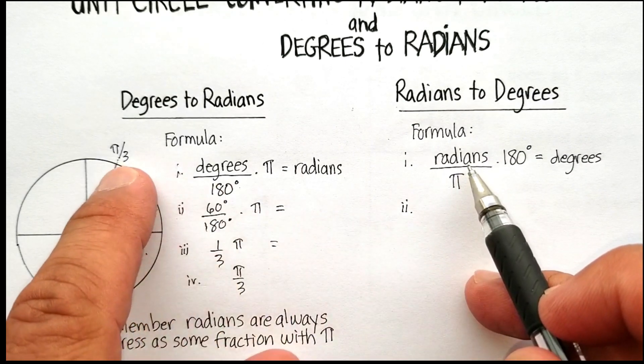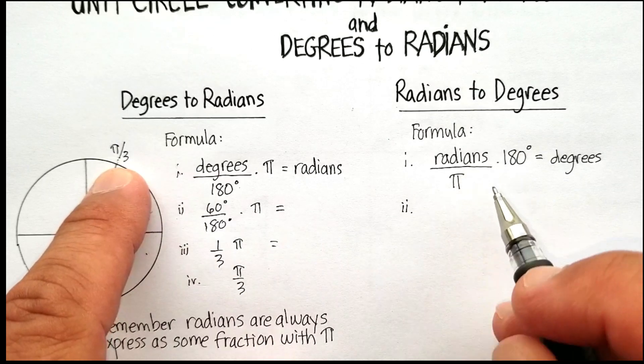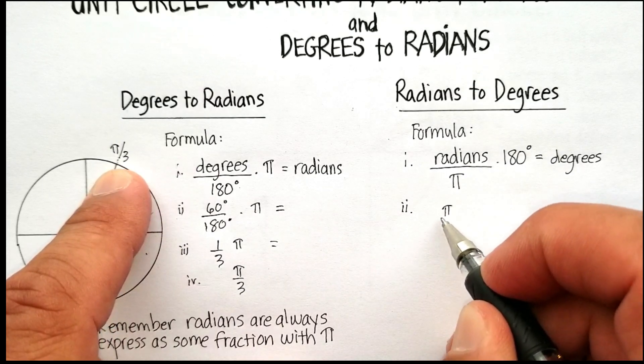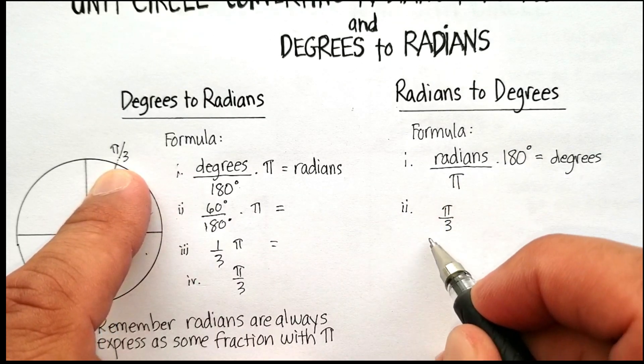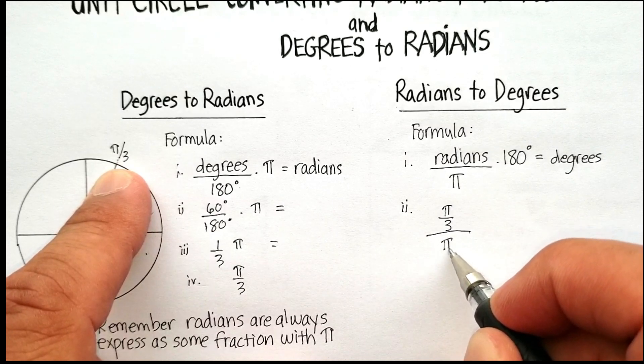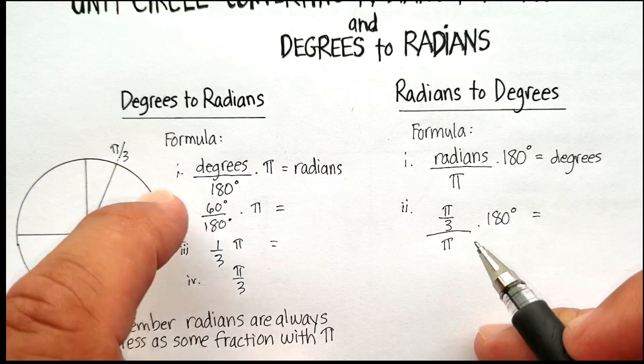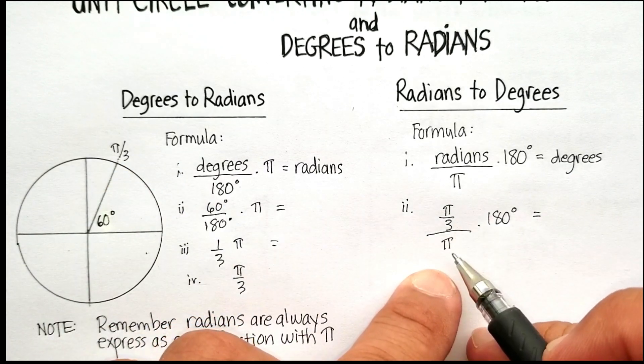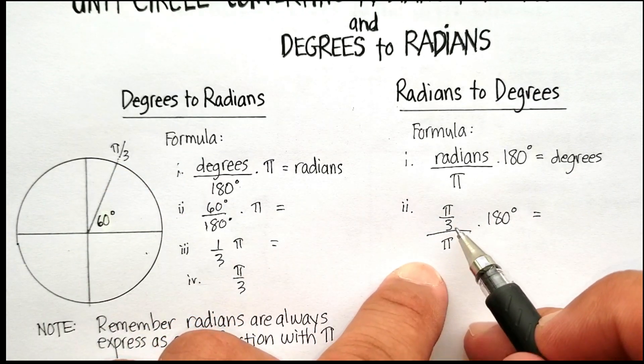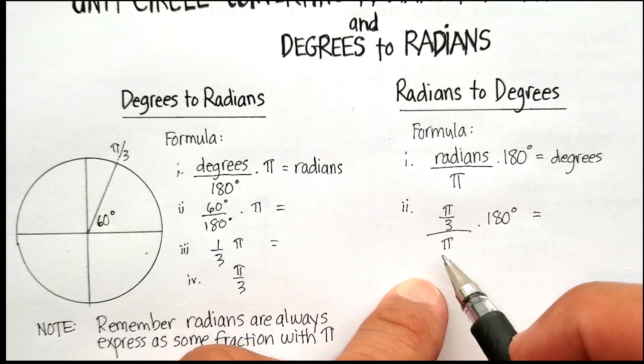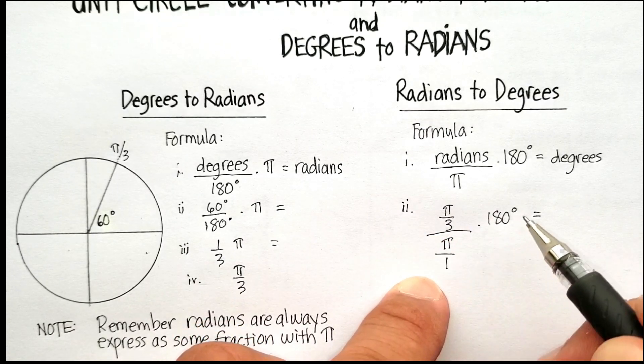If my radian is pi over 3, and then I divide it by pi times 180 to get my number of degrees, I'm going to have to multiply by the reciprocal here. Now, remember, whenever you have a fraction divided by, and let's just put this over 1.